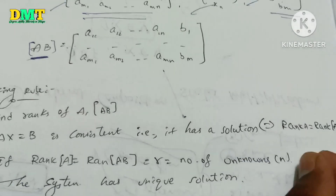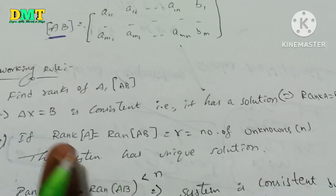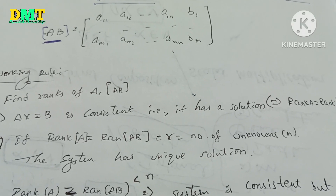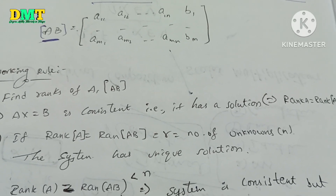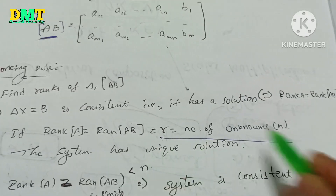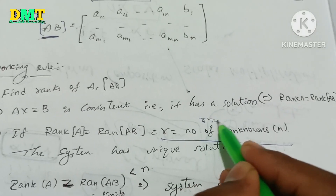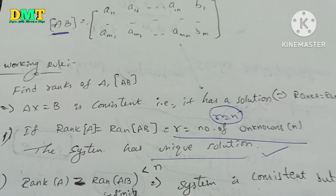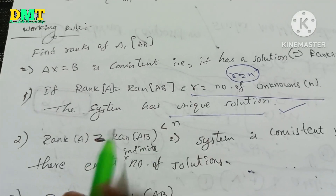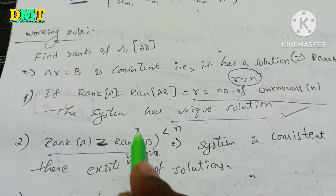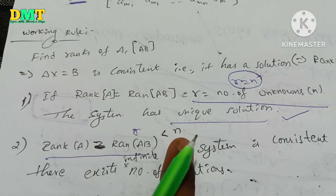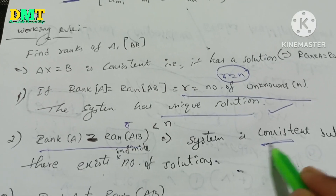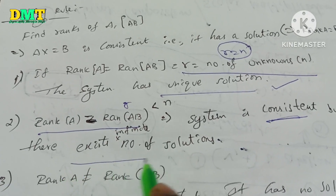Let's look at the condition: rank A is equal to rank [A|b]. If we have a non-homogeneous equation and r equals n, the number of unknowns, then under those same conditions, if r equals n, it is a unique solution. If r is less than n, the system is consistent but has an infinite number of solutions.